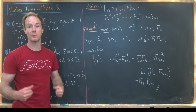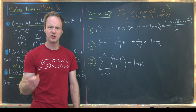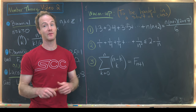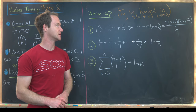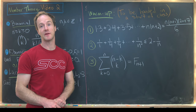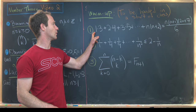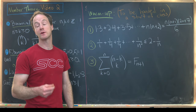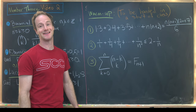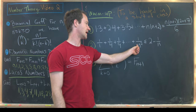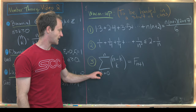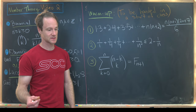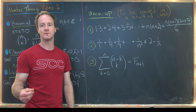Let's close with some warm-up problems. The first: prove that 1 times 3 plus 2 times 4 plus 3 times 5 plus ... plus n times (n plus 2) equals n(n plus 1)(2n plus 7) over 6. The second: prove the inequality 1 plus 1/4 plus 1/9 plus ... plus 1/n squared is less than or equal to 2 minus 1/n. The third involves a nice sum with binomial coefficients and Fibonacci numbers. If you're in the course, have these written up for your notebook at the beginning of class.